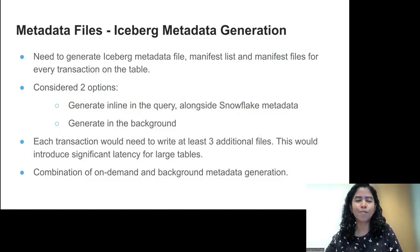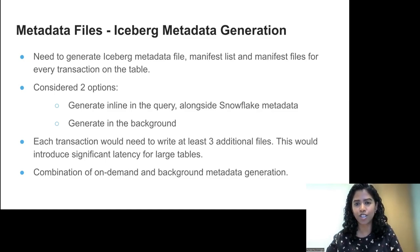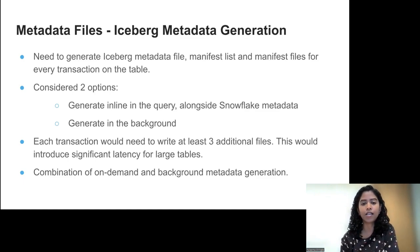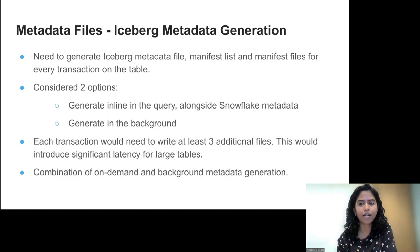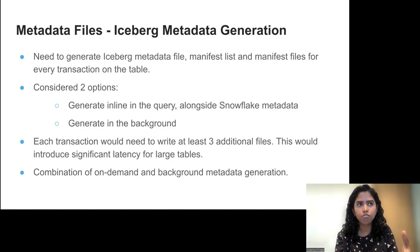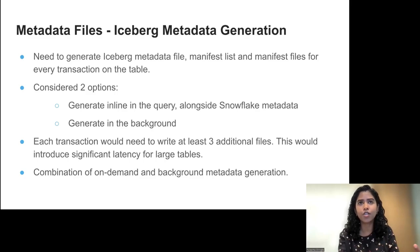We noticed that generating equivalent Iceberg metadata requires writing at least three files — three different PUT operations on S3 — which gets expensive for low-latency queries. You don't want a small one-row insert doing three PUT operations; it increases query latency quite significantly. So we decided to generate Iceberg metadata in the background rather than inline. In addition to background metadata generation, we also generate metadata on-demand. If the background process hasn't caught up and a request comes from the Snowflake catalog, we generate the metadata on-the-fly and return it, so external tools still see all the latest updates.